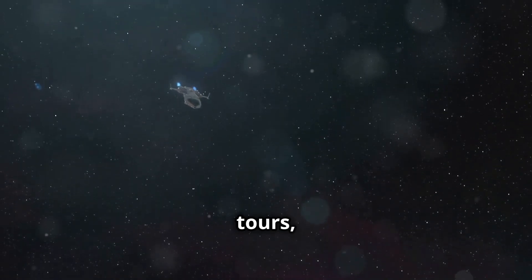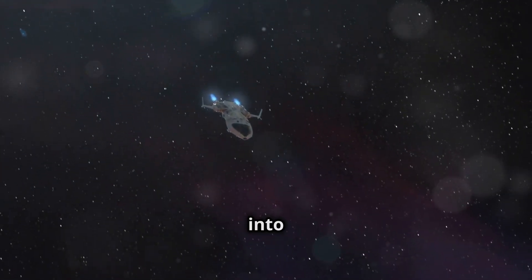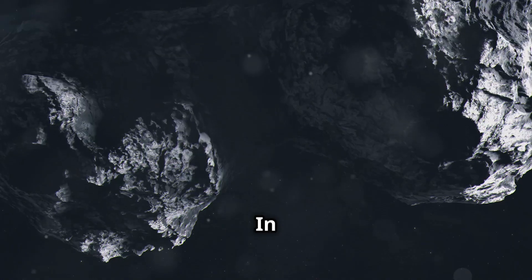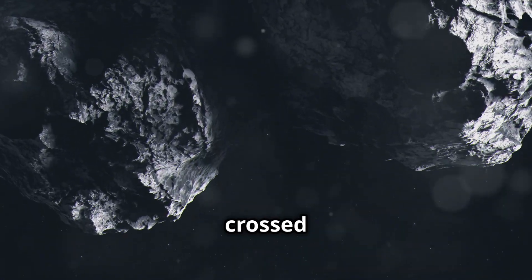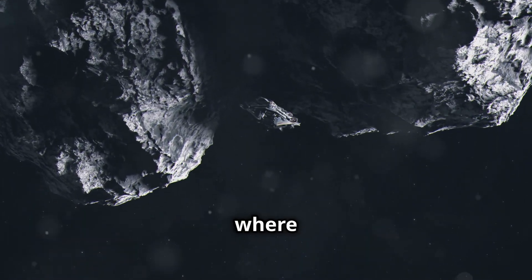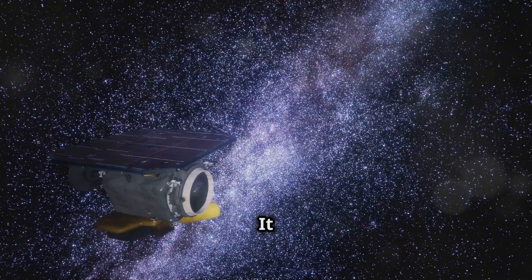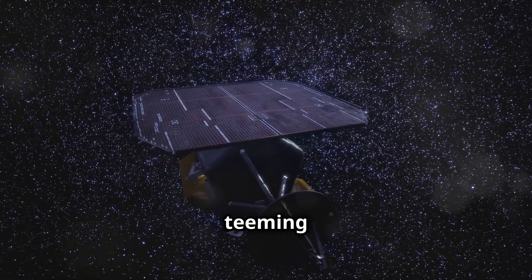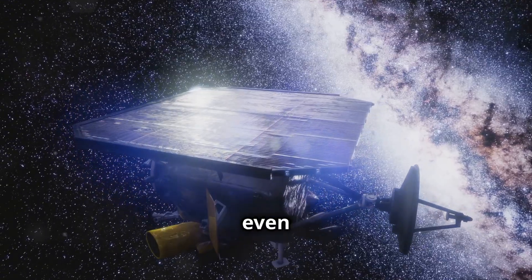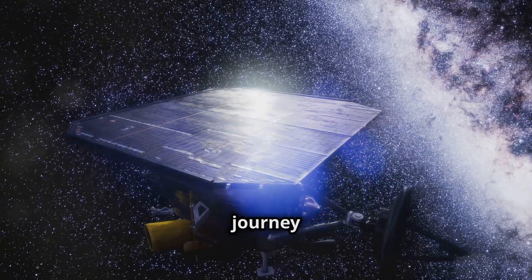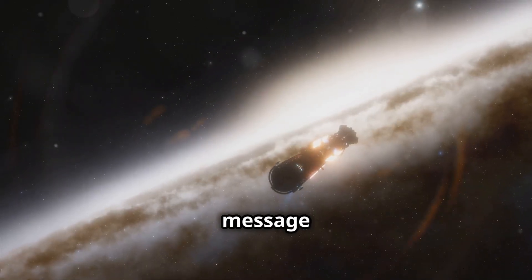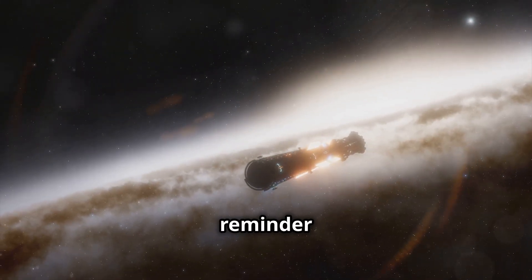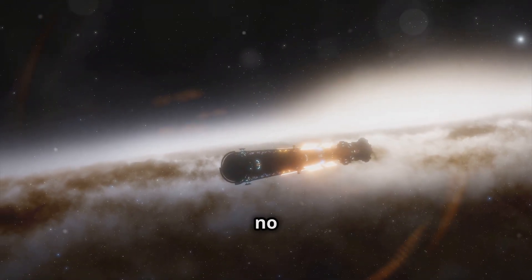After completing their planetary tours, Voyager 1 and 2 ventured into uncharted territory. In 2012, Voyager 1 crossed the heliopause, the boundary where the sun's influence ends. It now sends back data about interstellar space, a region teeming with cosmic rays and dense plasma. But even as their instruments fade, Voyager's journey continues, carrying our message into the stars, a reminder that humanity's curiosity knows no bounds.